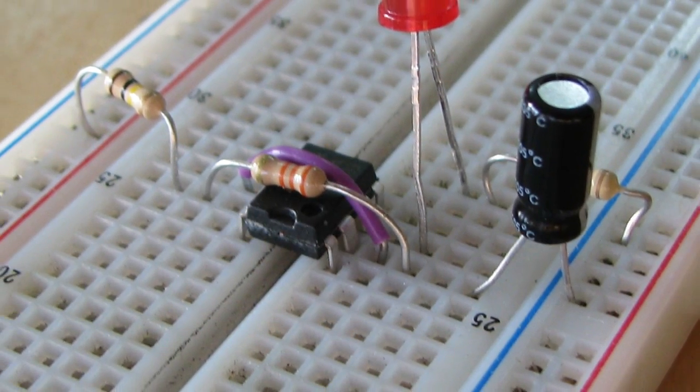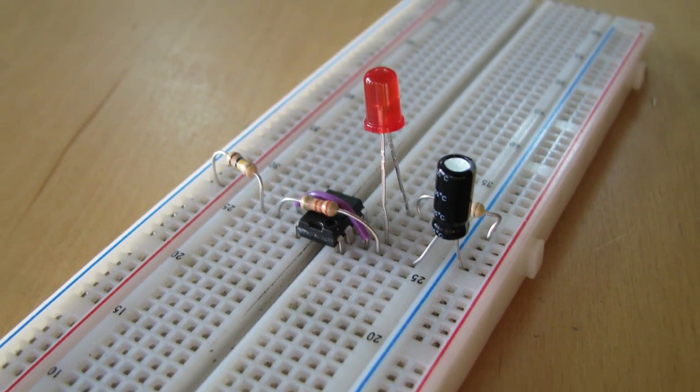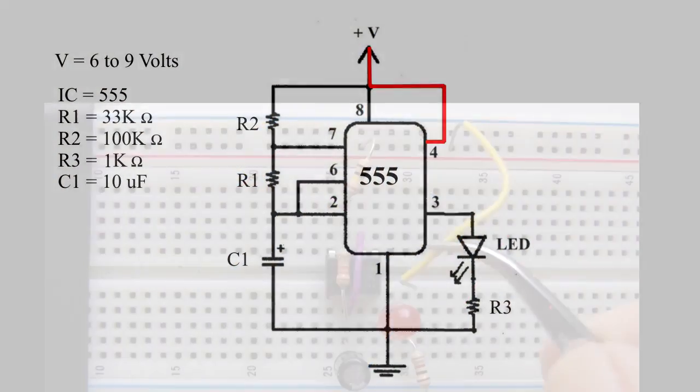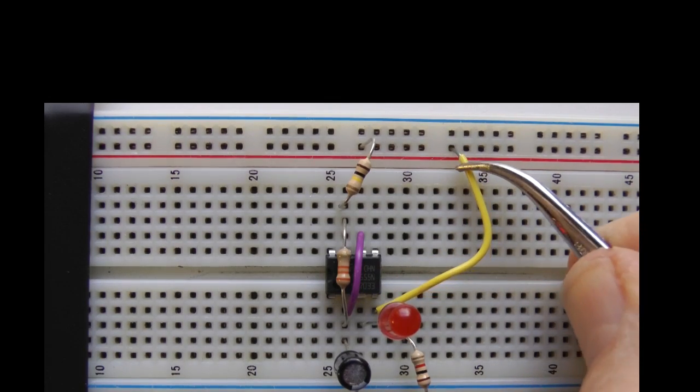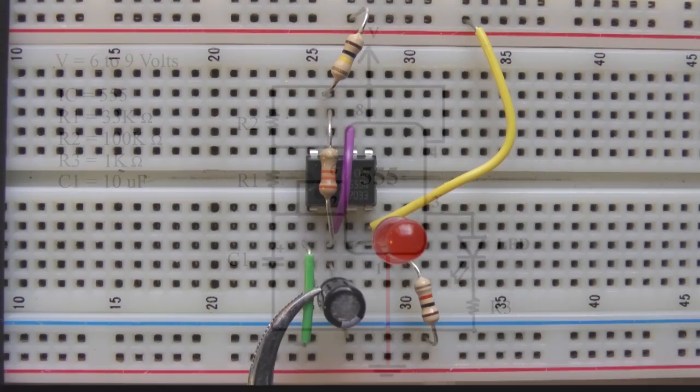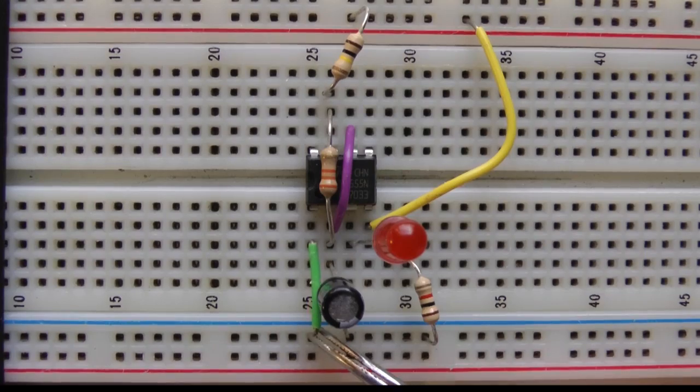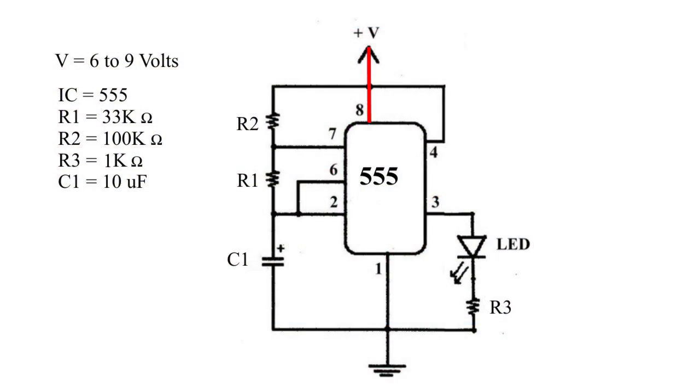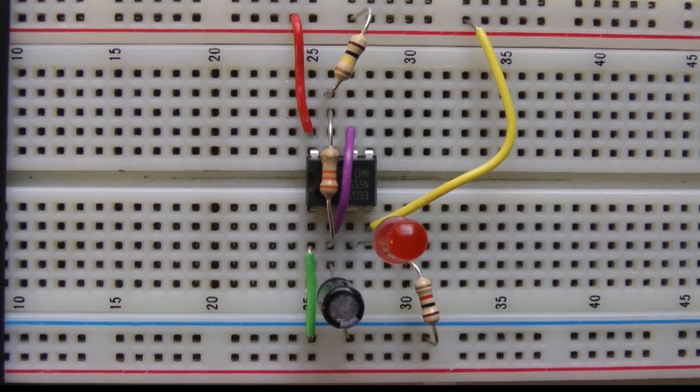We have three connections left to make, all of them wires. One wire goes from pin 4 to the positive supply line. The next wire goes from pin 1 to the negative supply line. And the final connection is a wire from pin 8 to the positive supply line. This circuit does not require any connection to pin 5.